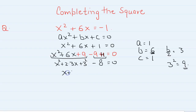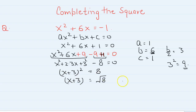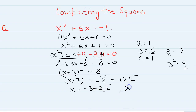So this can be written as x plus 3 squared is equal to 8. So x plus 3 is equal to root 8, that is plus or minus 2 root 2. So x is equal to minus 3 plus 2 root 2, and x is equal to minus 3 minus 2 root 2. That is the answer.